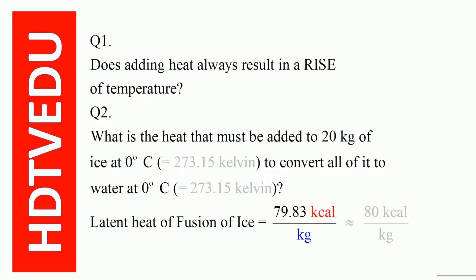Question number one: does adding heat always result in a rise of temperature? Question number two: what is the heat that must be added to 20 kg of ice at 0 degree Celsius (273.15 Kelvin) to convert all of it to water at 0 degree Celsius? The latent heat of fusion of ice is given as 79.83 kilocalories per kg, approximately 80 kilocalories per kg.